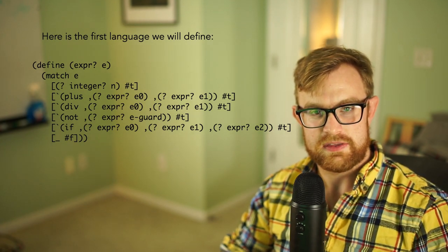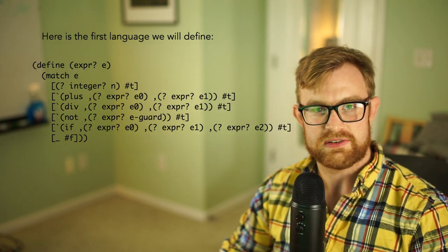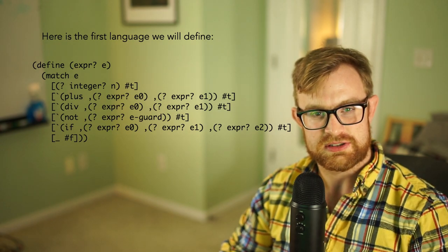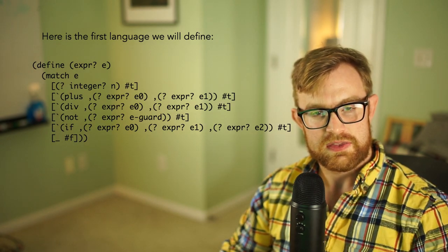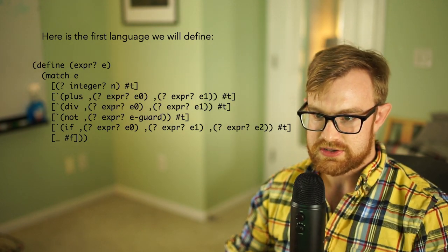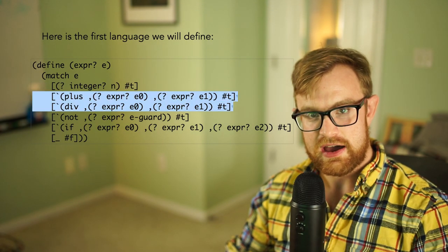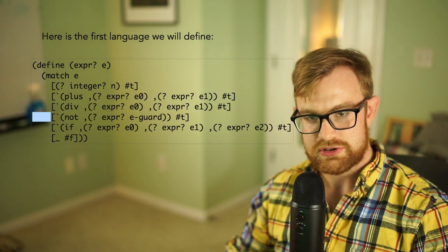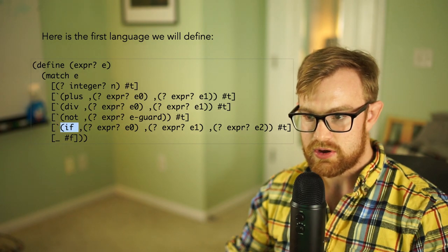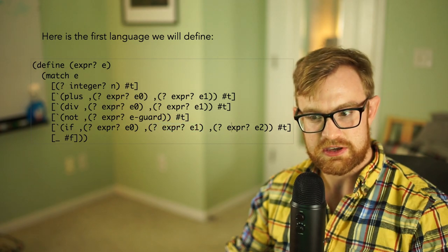Here's an example. I'm going to define a language named ifarith that we're going to be using for the rest of the week — today's lecture and the next lecture on natural deduction style semantics. This language ifarith includes basic arithmetic operations: constants, plus, divide, along with negation (not), and branching (if), where we have a guard expression and then a true expression and false expression to be executed.